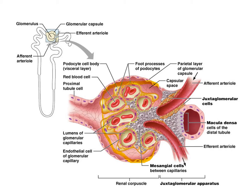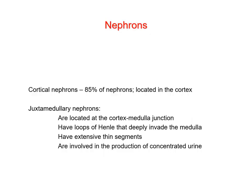Here you see finer structural detail of the glomerular capsule with the glomerulus inside. This is the distal convoluted tubule as it comes up near the Bowman's capsule where the tubular system originated. In the wall of that distal convoluted tubule, right near the glomerulus, are the macula densa cells, which together with the juxtaglomerular cells around the afferent arteriole form the juxtaglomerular apparatus. About 85% of nephrons are cortical nephrons.